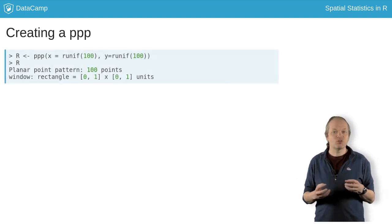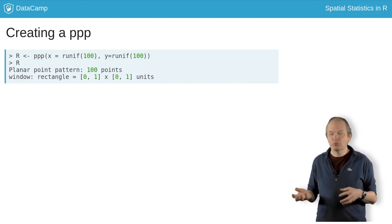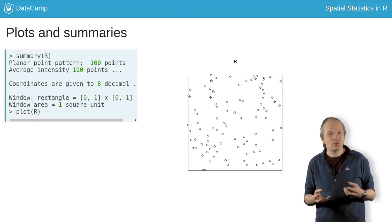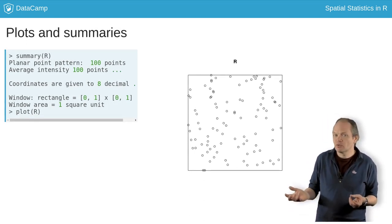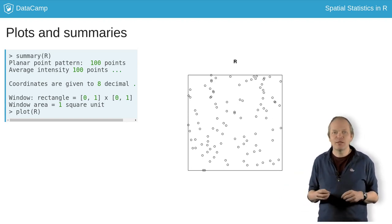Spatstat defaults to a unit square for the window, so the simplest PPP object needs only x and y coordinates. You can also plot PPP objects with plot, print them to the console with print, or show their summary information with summary to get basic information.